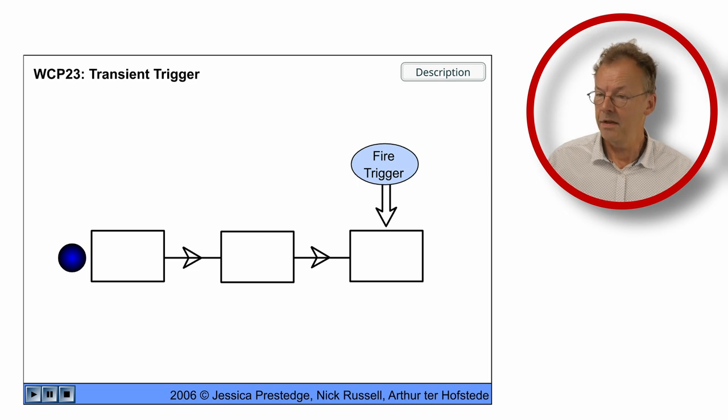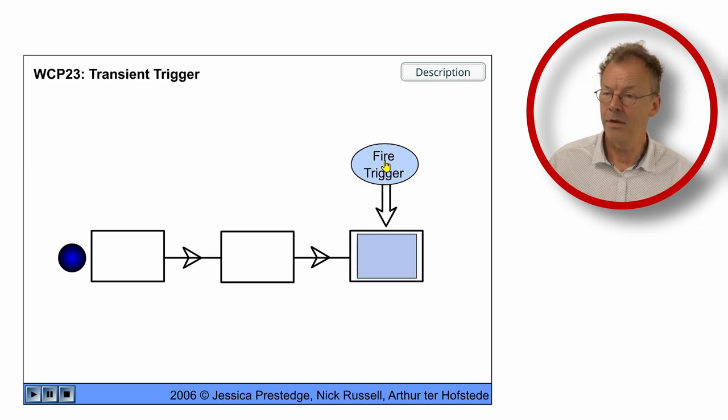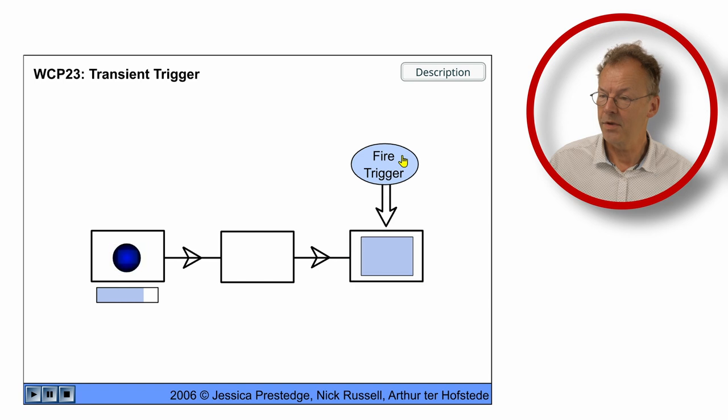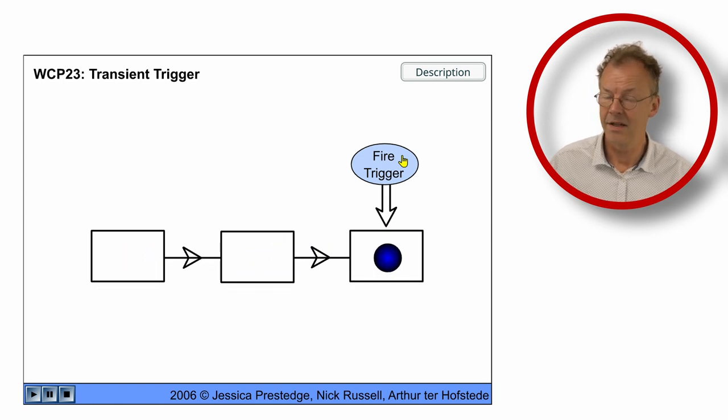Okay, in this flash animation, which is actually quite interesting, we see that we have a trigger that we can fire and if we fire it now, we can see that it's somehow lost. And if we start the process and we fire it before it has reached the last task, it will be lost.